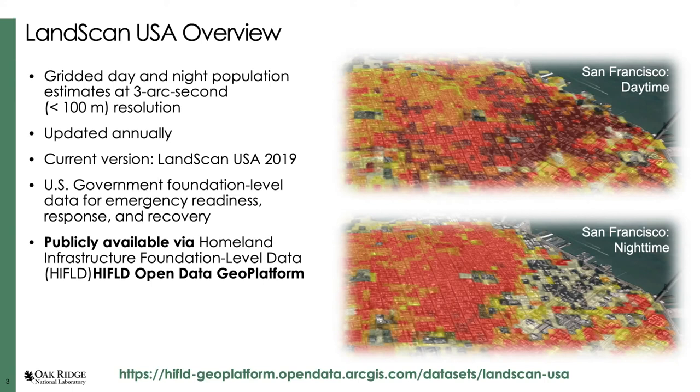LandScan is a top-down approach where we take census data, buildings data, roads, parcel information — a bunch of different datasets — and then we try to disaggregate them into probabilities of where people are at nighttime and where they are during the day, getting the highest resolution population we can for use in emergency response, research, and all sorts of things. LandScan USA has currently been made publicly available at the links shown.